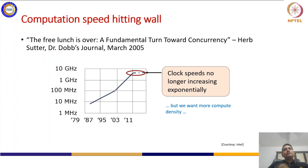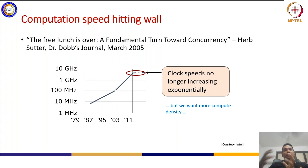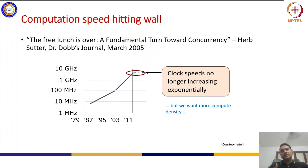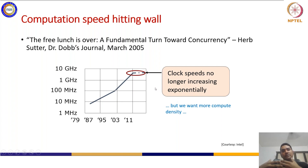If you see from the computation engine, the processor is the basic computation engine. As you know, you cannot increase the clock speed anymore due to the end of Dennard scaling, and the power wall is being hit. That is why you cannot get more than a particular fixed clock frequency that is available nowadays in processors or computation engines.